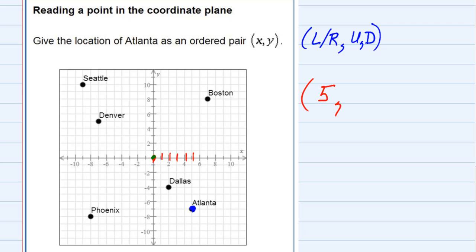to get to Atlanta I would need to go down 1, 2, 3, 4, 5, 6, 7 units.